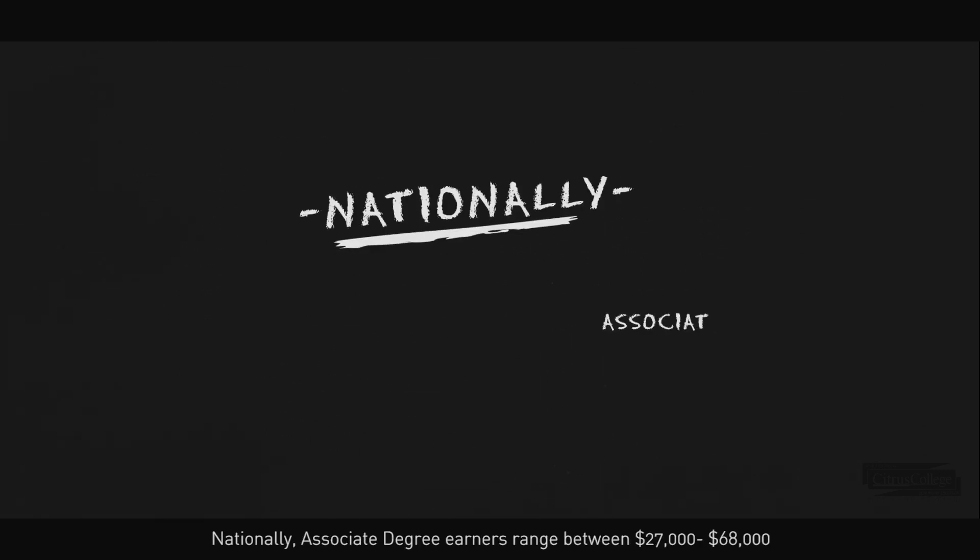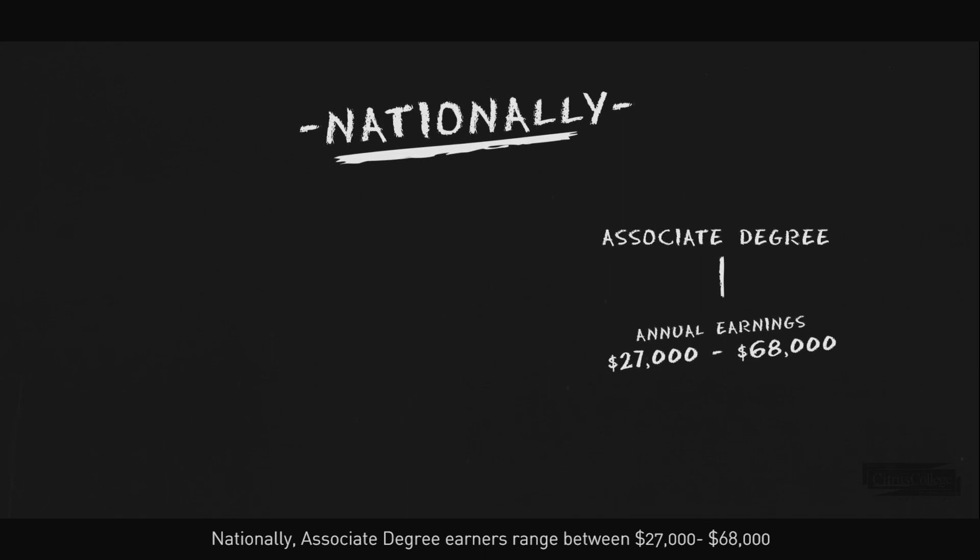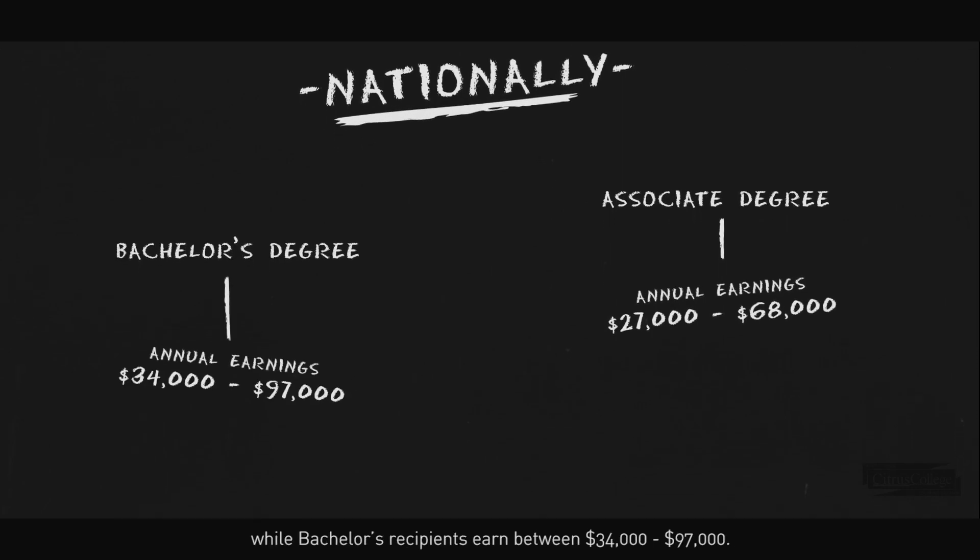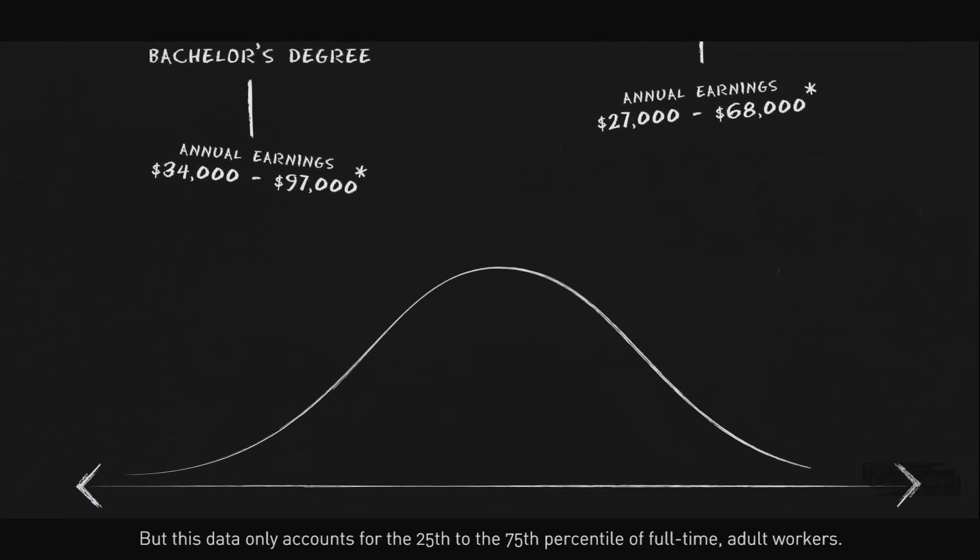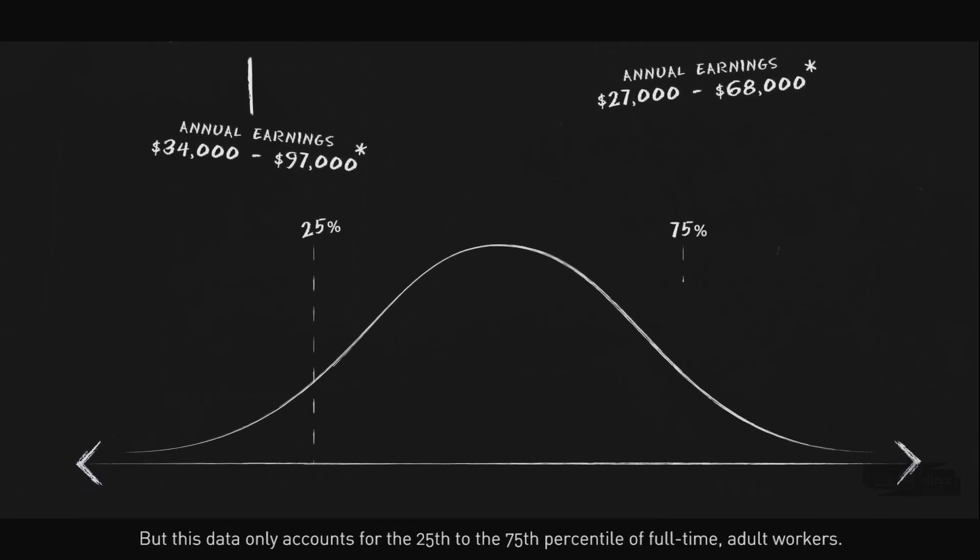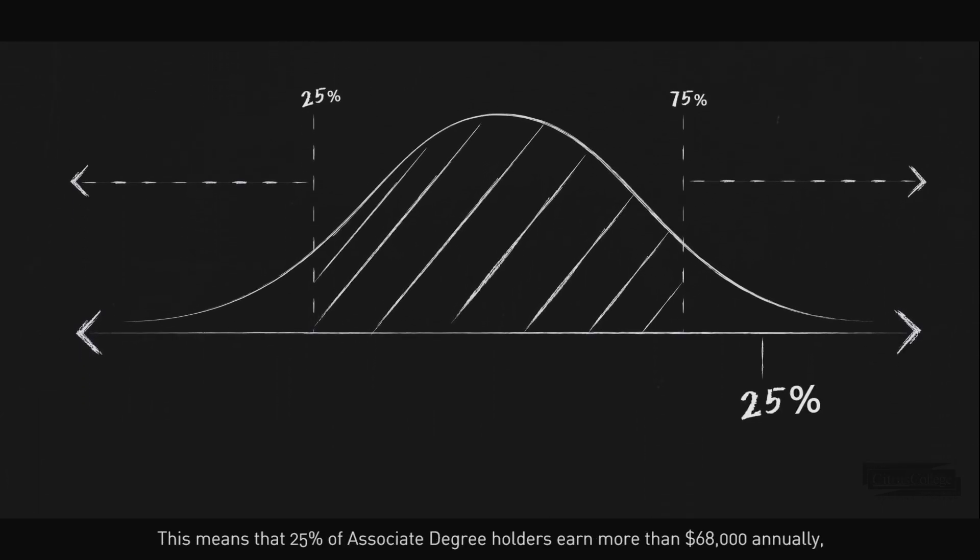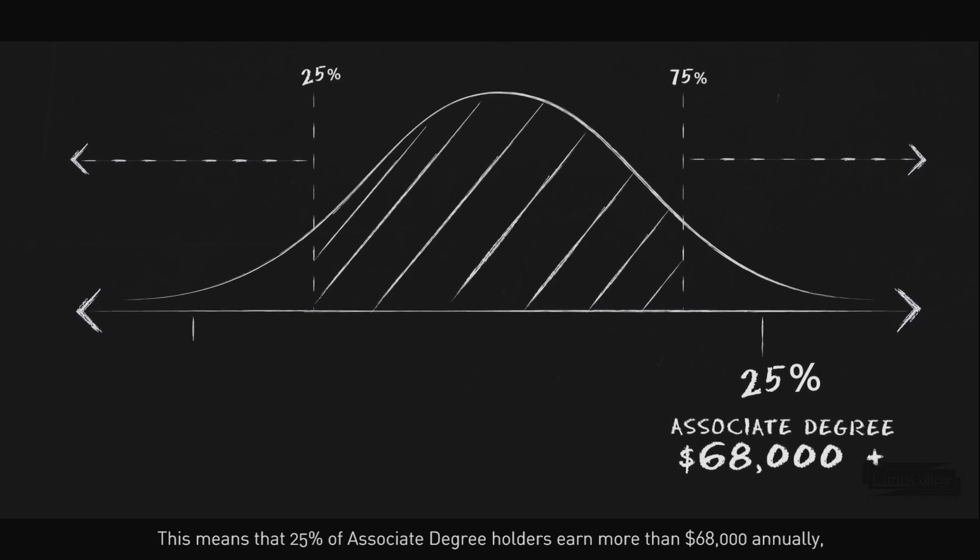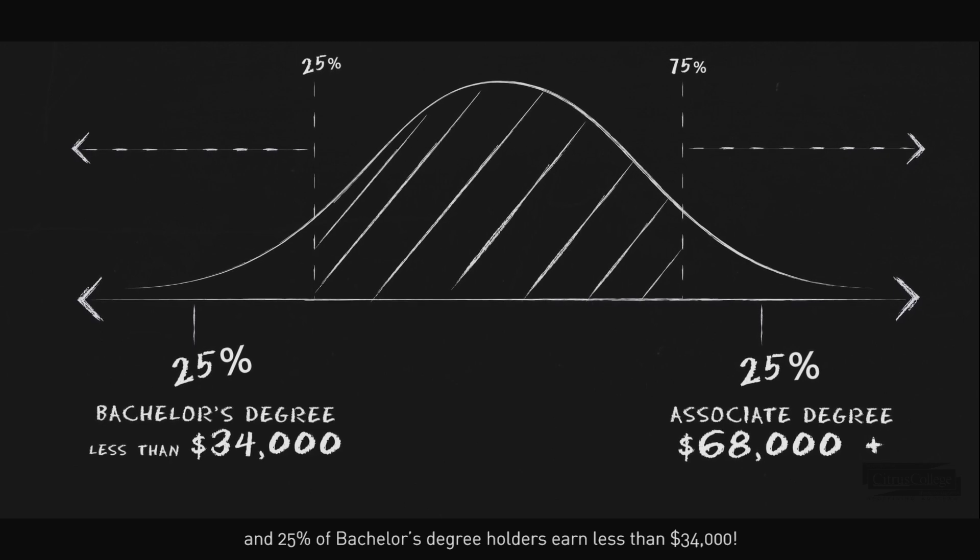Nationally, associate degree earners range between $27,000 and $68,000, while bachelor's recipients earn between $34,000 and $97,000. But this data only accounts for the 25th to the 75th percentile of full-time adult workers. This means that 25% of associate degree holders earn more than $68,000 annually, and 25% of bachelor's degree holders earn less than $34,000.